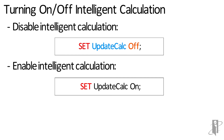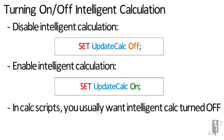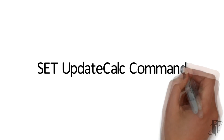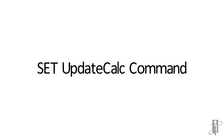If we want to turn it on later in the calc script, we can say SET UPDATE CALC ON. You don't need to turn it on at the end of your calc script — it's going to revert to the database setting when your calc script finishes. For most sbase calc scripts, we're probably going to turn intelligent calc off, so we'll see SET UPDATE CALC OFF at almost every single sbase calc script that we write. Sometimes you'll hear people say their calc script works some of the time but sometimes doesn't operate on every block — most often that's because sbase is using intelligent calculation, and we can help just by adding a SET UPDATE CALC OFF command at the top of that calc script.